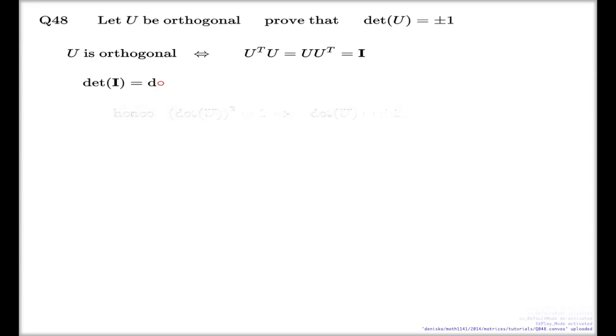Like the determinant of identity, which we all know. What's the determinant of the identity? One, because identity is the simplest of all example of row echelon form, and we know the determinant of the row echelon form is a product of the elements on the diagonal. Identity has all ones on the diagonal.